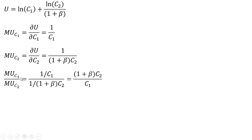We are going to form the marginal rate of substitution, which is the marginal utility of consumption in period 1 divided by the marginal utility of consumption in period 2. So just putting our results together here and simplifying, we get this.